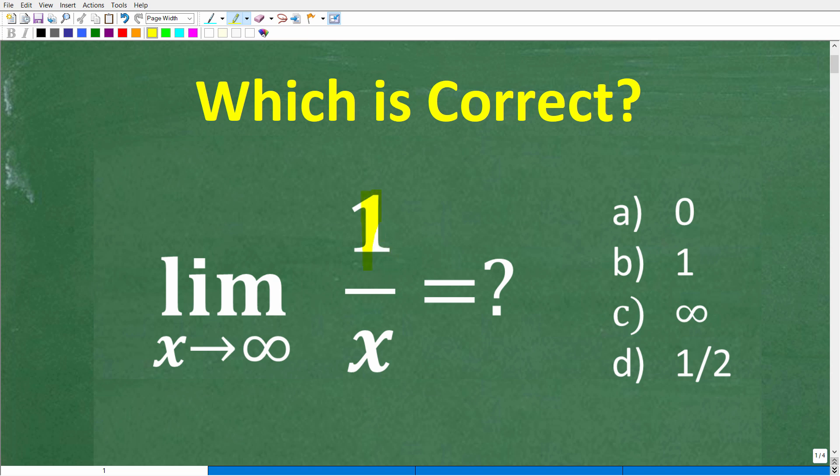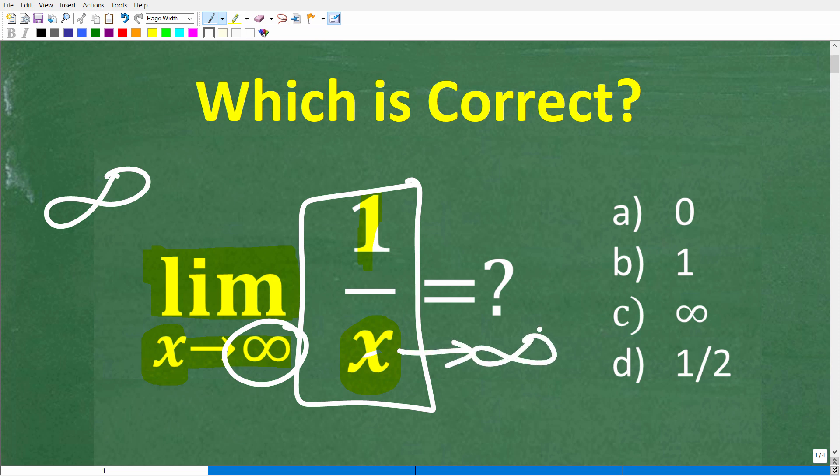All right, so what is the problem? We have a fraction 1 over x, and this LIM stands for limit. I'll explain this in just one second. But we want to think about what's going to happen here as this x approaches infinity. Now infinity, just in case you don't know, is a very large number. So what do you think is going to happen to the overall value of this fraction as x approaches infinity?